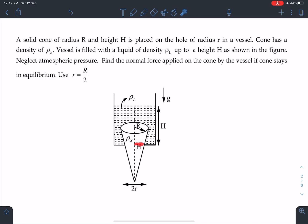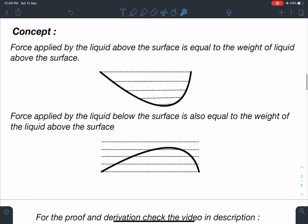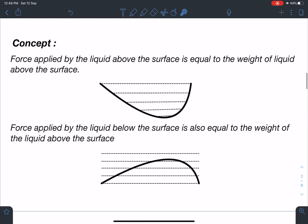The radius of this hole is r. So let's discuss the concept part of this problem here. The concept here is: force applied by the liquid above the surface is equal to weight of the liquid above the surface. So here you can see that if liquid is present above the surface, then in that case simply this liquid is going to apply a force which is equal to its weight. Here, this much weight of the liquid. So directly we can write these kind of relations instead of applying force due to pressure and integrating it.